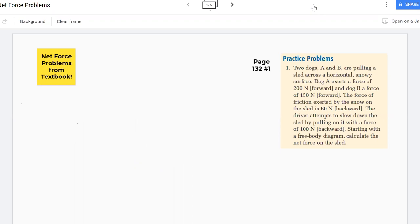Hello everyone, my name is Brad Langdell and I want to help you through some net force problems. These are out of the textbook we use in Physics 20 and the first one's on page 132, it's number one. We got two dogs, A and B, pulling a sled across a horizontal snowy surface. Dog A is going to apply a force of 200 newtons forward.